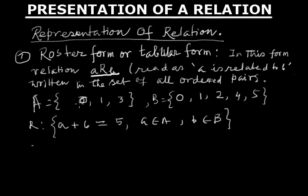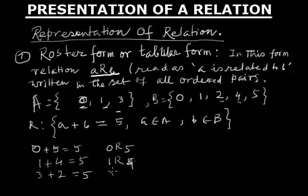Since sum is 5, if you take 0, we know 0 plus 5 equals 5, so we'll write 0 related to 5. Then 1 plus 4 equals 5, so 1 related to 4. And then 3 plus 2 equals 5, so 3 related to 2.